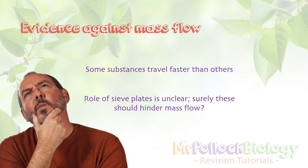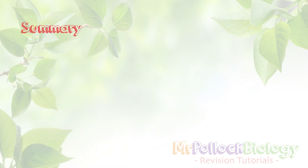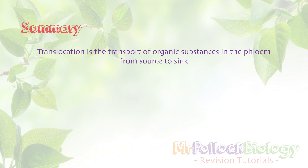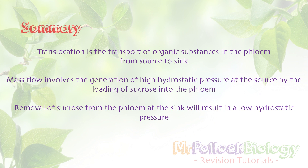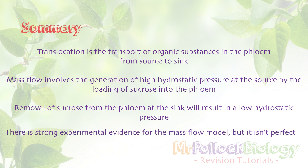To summarise: translocation is the transport of organic substances in the phloem, from a source where they are produced to a sink where they are either used up or stored. The mass flow hypothesis involves generating a high hydrostatic pressure at the source end by loading sucrose into the phloem, and a low hydrostatic pressure at the sink end by removing sucrose. Water follows the sucrose — moving to where the water potential is more negative — and there is good evidence for mass flow, but it isn't perfect.